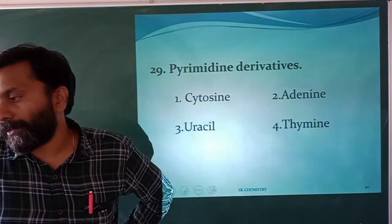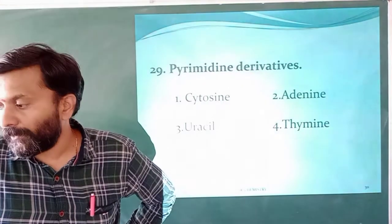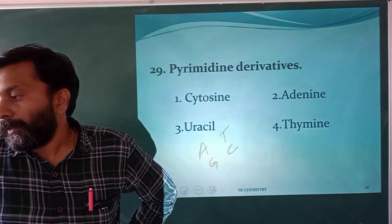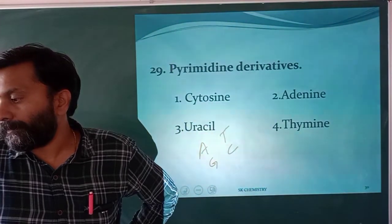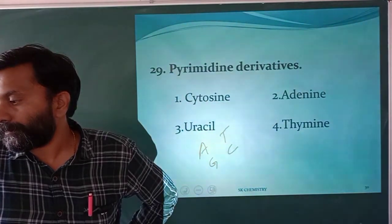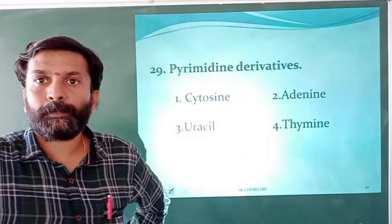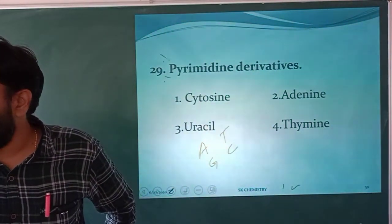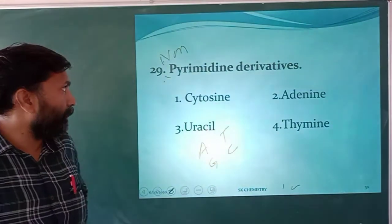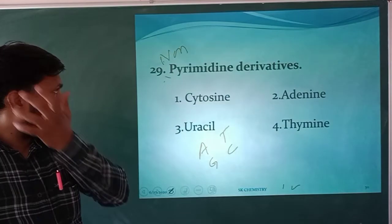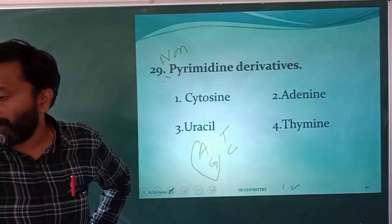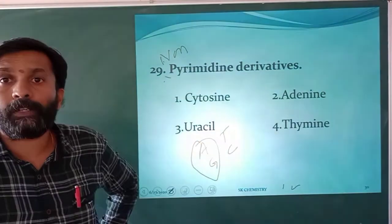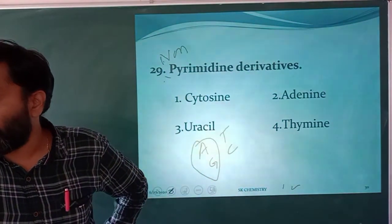Pyrimidine derivatives: using 'All Time Girls College,' adenine (A) and guanine (G) are purine derivatives. The rest — cytosine, thymine, uracil — are pyrimidine derivatives. So non-pyrimidine derivatives are adenine and guanine.